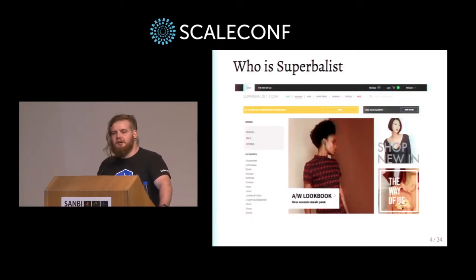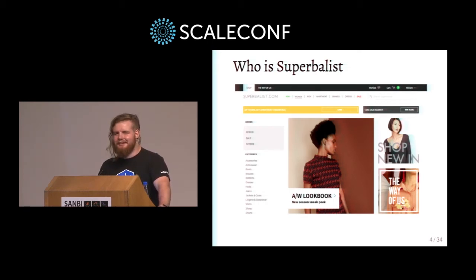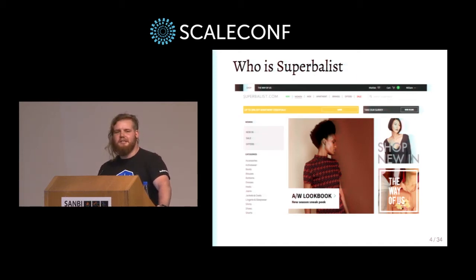Superbalist.com is an e-commerce company based only in South Africa. We're owned by Takealot and part of the Takealot division with Mr. Delivery also. We aim to be the number one fashion destination for 18 to 35-year-olds. People also have misconceptions about what we are - we sell male and female clothing and apartment stuff as well. Our legacy stack is mainly PHP, with some Python and Django as well.